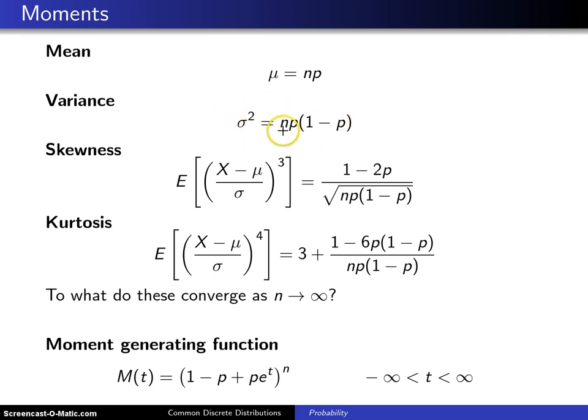The population skewness is the expected value of the third standardized moment, and that is 1 minus 2p over the square root of np times 1 minus p.